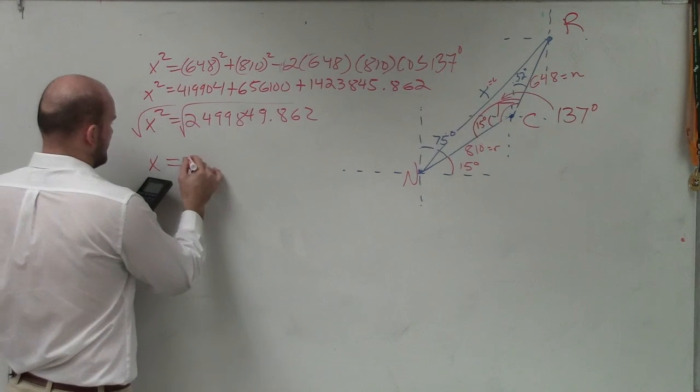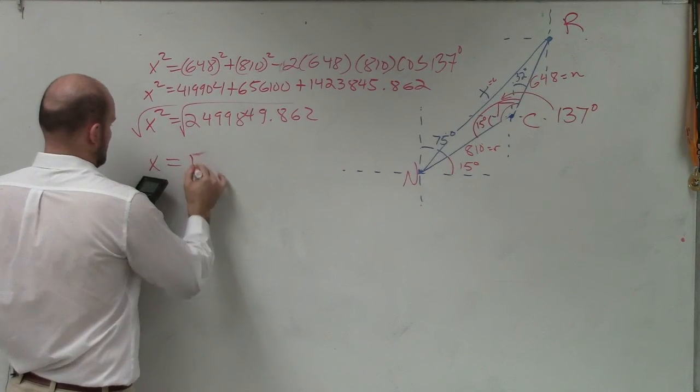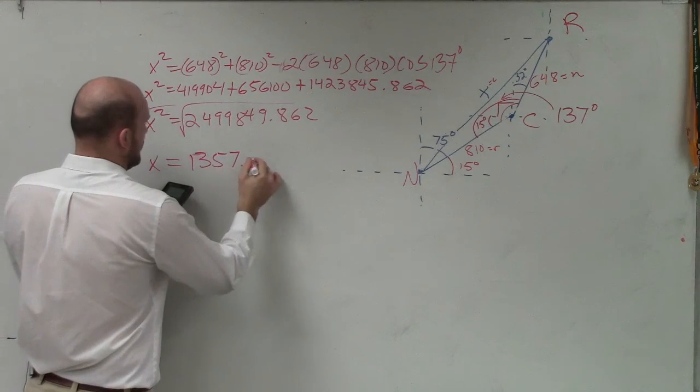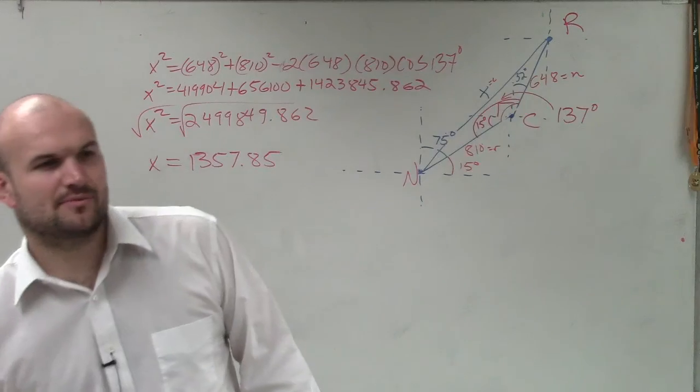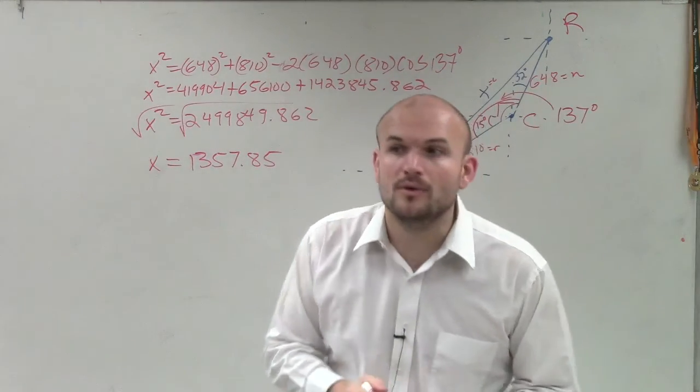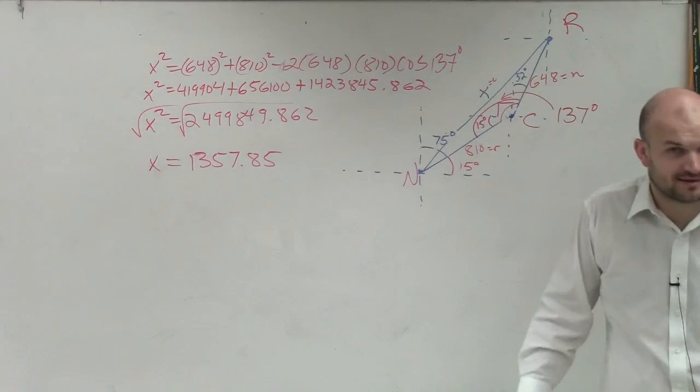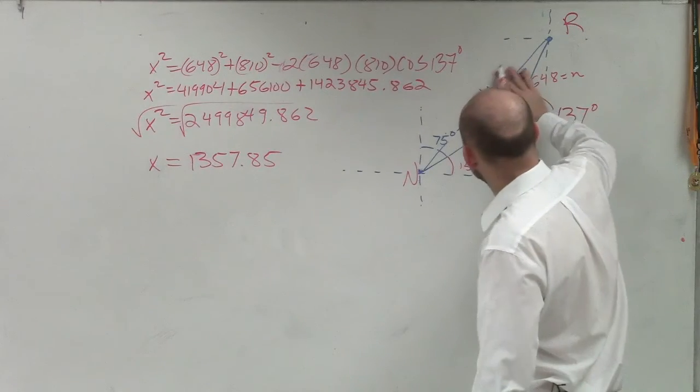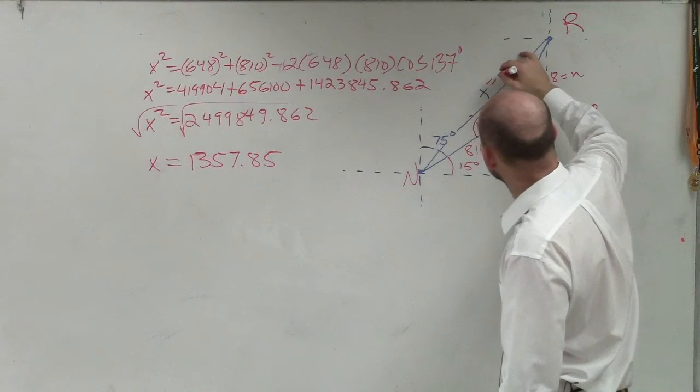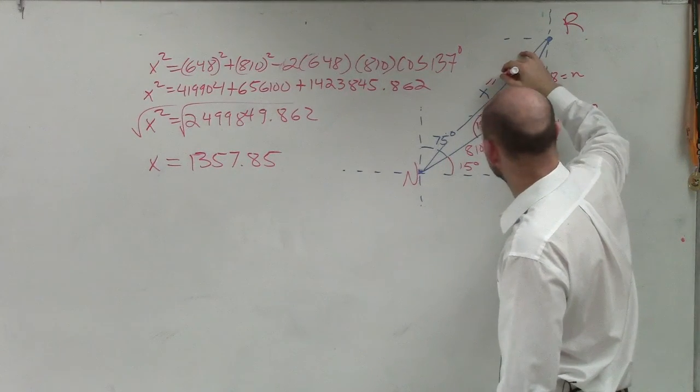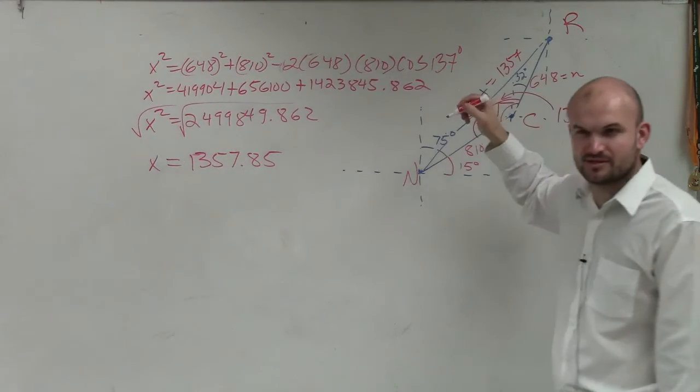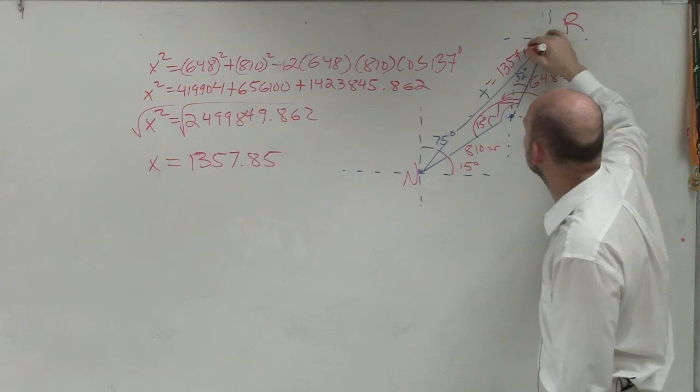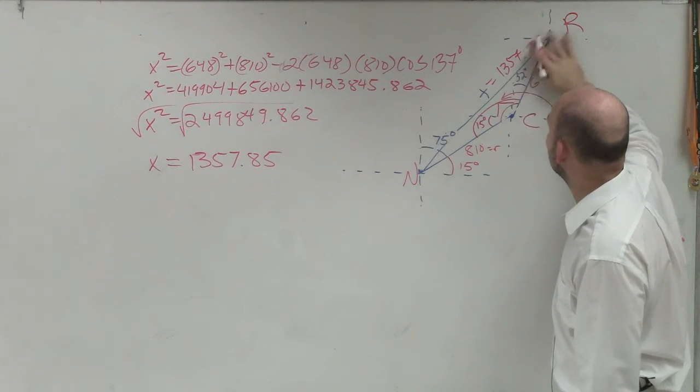There you go. So now I'm not done yet. We're at 1,357.85, okay? Sorry, I think I typed something wrong in my calculator. So now that's the distance. So we now know the distance from Rosewood to Niagara, or whatever it was, is 1,357.85 miles.